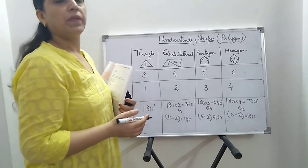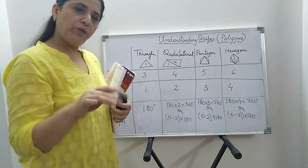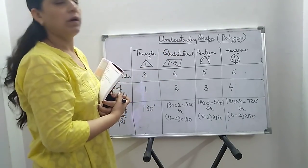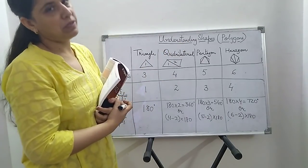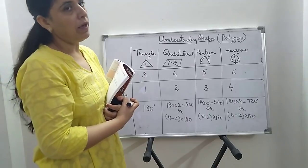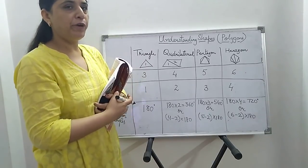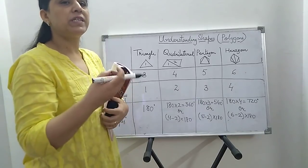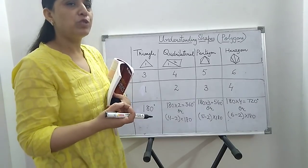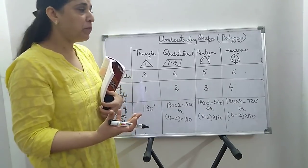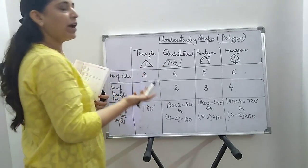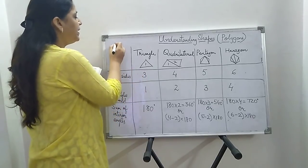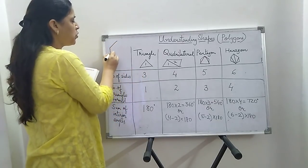Good morning students. Today we are going to continue with the same chapter, that is understanding shapes, and we will be dealing with polygons today. In the previous videos I have already told you what a polygon is and the types of polygons, what a six-sided polygon is known as, what a five-sided polygon is known as. Today we are going to derive a formula, and we have already seen the internal angles of a polygon.